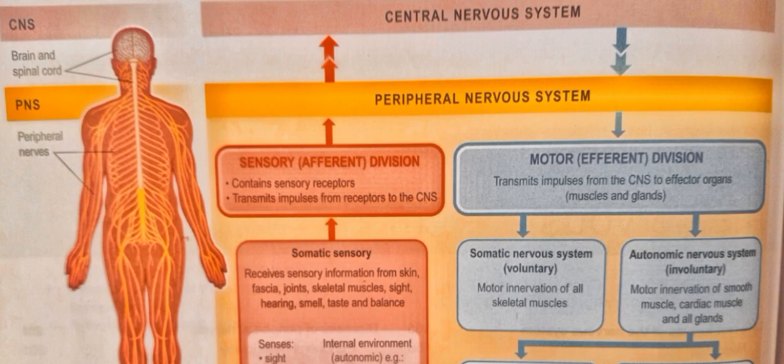The Somatic Nervous System controls activities that are under our voluntary control. The Autonomic Nervous System, on the other hand, is completely involuntary.